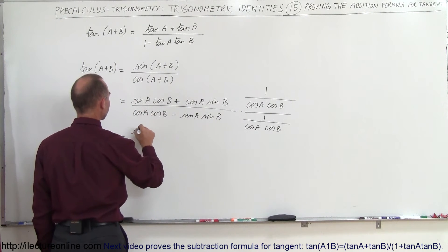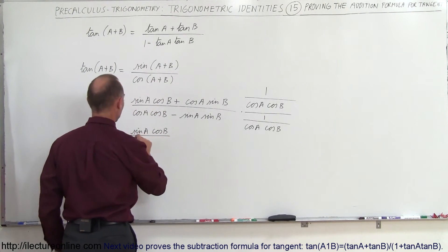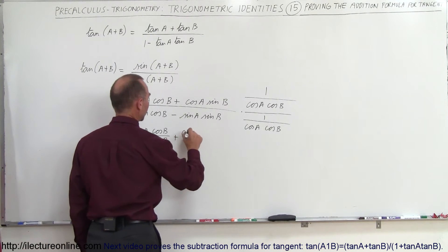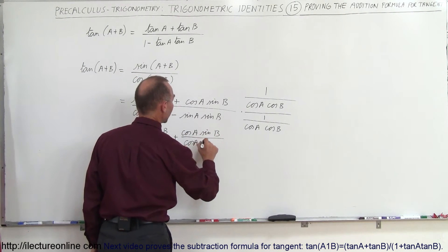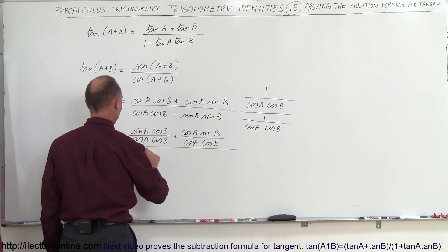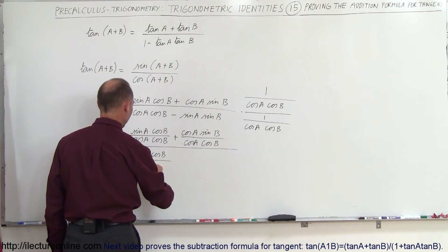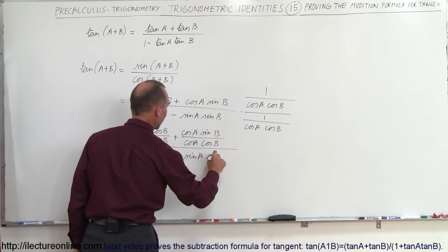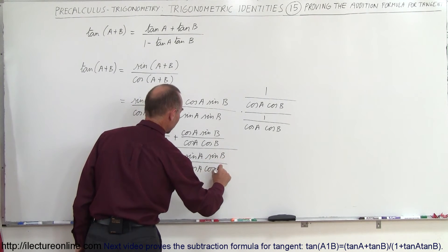Hopefully everything else will fall into place. Multiplying through gives us: sine A times cosine B divided by cosine A times cosine B, plus cosine A sine B divided by cosine A cosine B, all divided by cosine A cosine B divided by cosine A cosine B — which gives us the 1 — minus sine A sine B divided by cosine A cosine B.